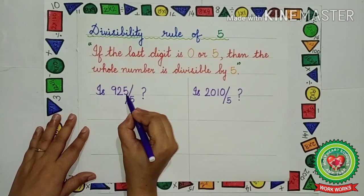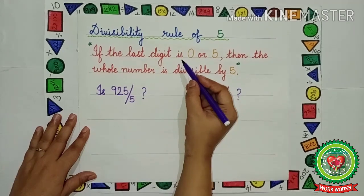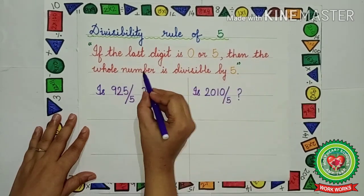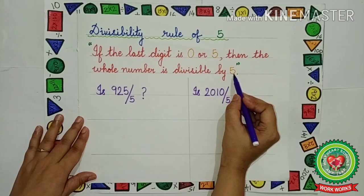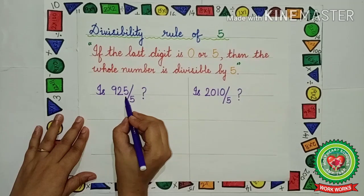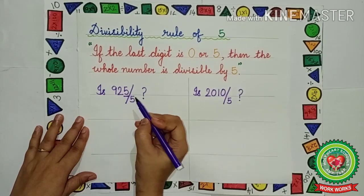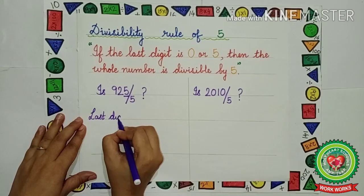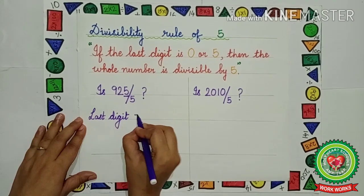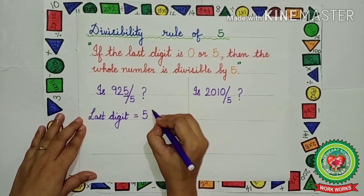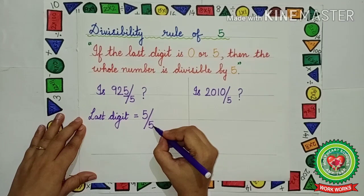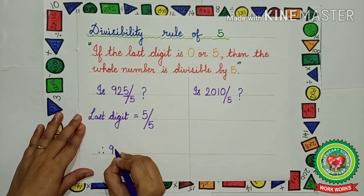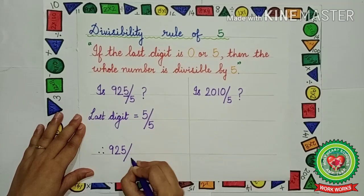Is 925 divisible by 5? The rule of 5 says if the last digit is 0 or 5, then the whole number is divisible by 5. We have to check if the last digit is 0 or 5. The last digit is 5, which means it is divisible by 5. According to the rule, the whole number is divisible by 5. Therefore, 925 is divisible by 5.